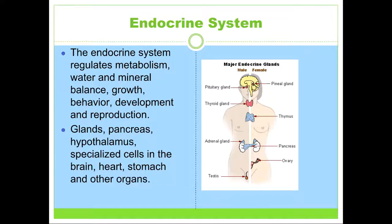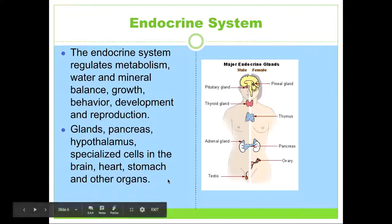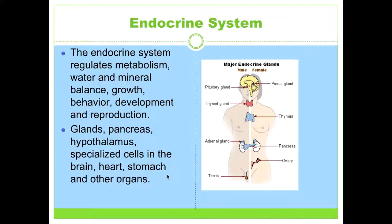Looking at the endocrine system, notice there is the pineal gland, pituitary gland, thyroid gland, working your way down from head to toe — there are a lot of different glands. That's what the endocrine system is: a series of glands within our body. They regulate metabolism, water, mineral balance, growth, and behavior — basically almost everything about how our body functions. This includes glands, the pancreas, specialized cells in the brain, the heart, the stomach, as well as other organs. The big thing to know is that the endocrine system is a series of glands that pretty much controls everything our body does.